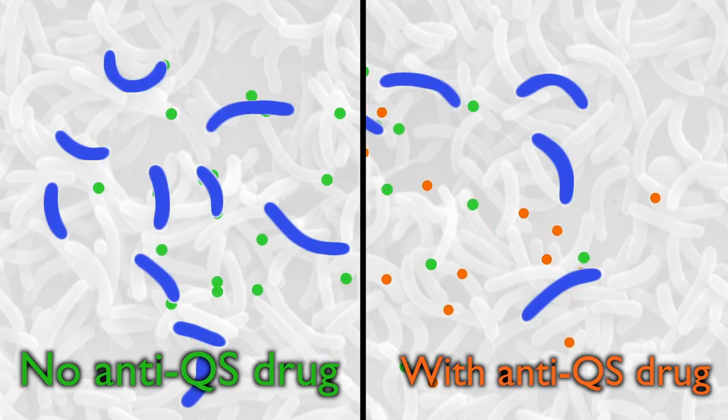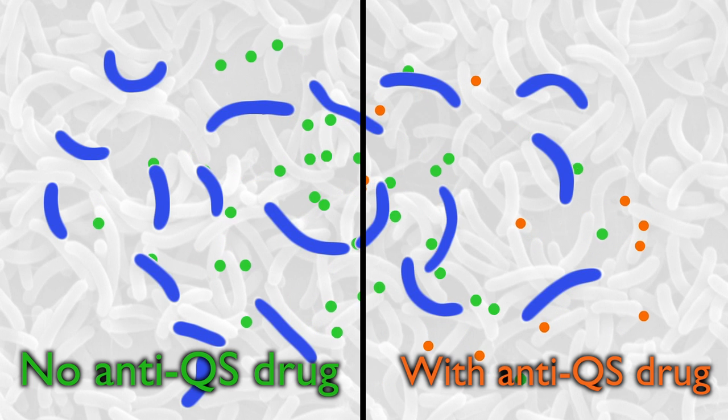We know that quorum sensing controls biofilm formation, so if we can somehow jam the quorum sensing communication mechanism, we would expect that we would delay or even completely avoid biofilm formation, so we don't clog the channels.